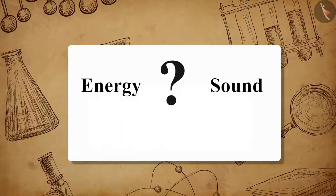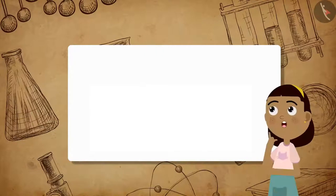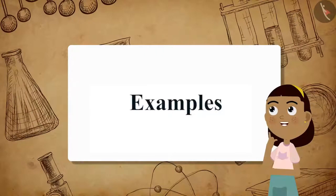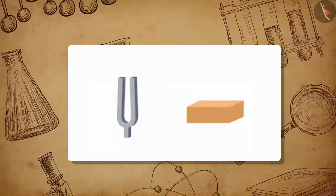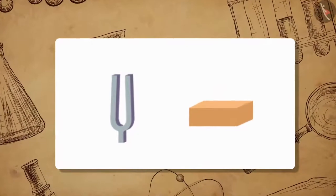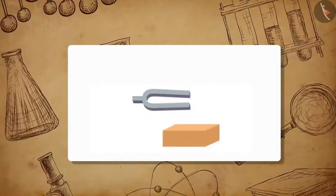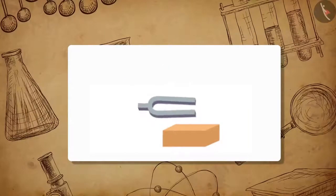Now let us take a few simple examples to find answers to these questions. Take a tuning fork and a rubber pad. Hit one of the prongs of the tuning fork on the rubber pad to set the fork on vibration.